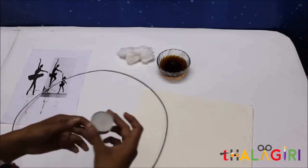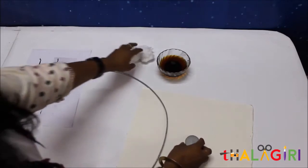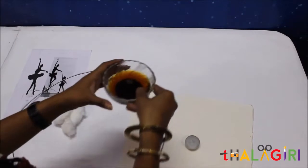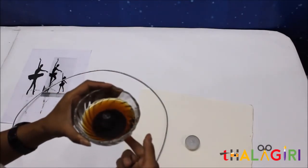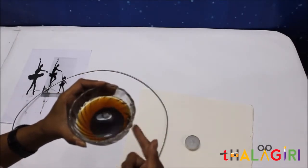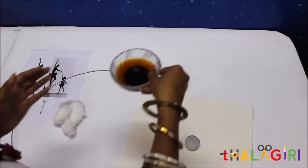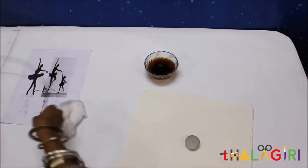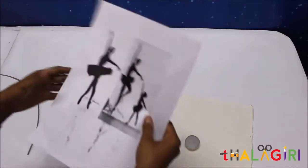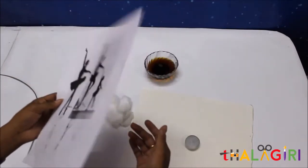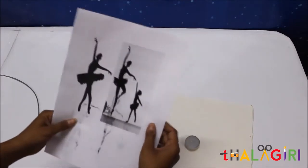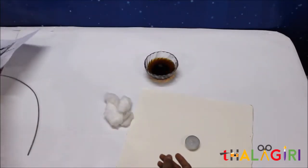You need a tea light candle. You will require cotton. And you will need boiled water with tea leaves. And if you want, you can put some coffee in it. And you also need some printouts, whatever design you want. I have taken ballet dancer forms. So I have taken this thing as my theme.